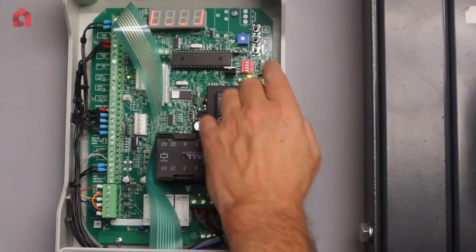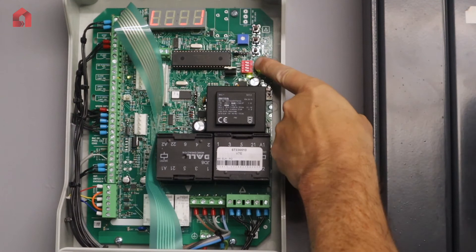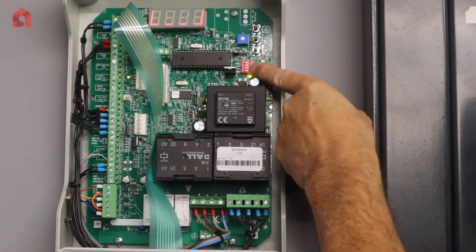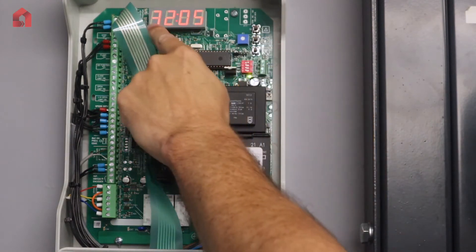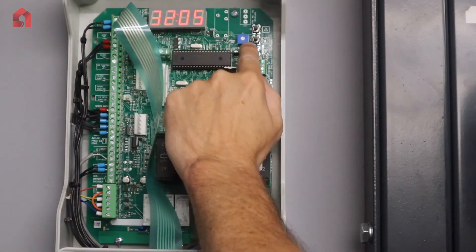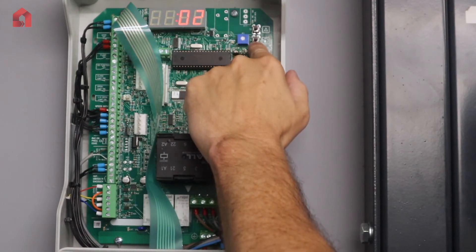So I'll give you a quick run through on how to get into the settings of this panel. So within the panel you have four dip switches. To get into the parameters, if you flick on dip switch one, it will give you the parameters there. So to scroll through the parameters, you can go up and down with the buttons.